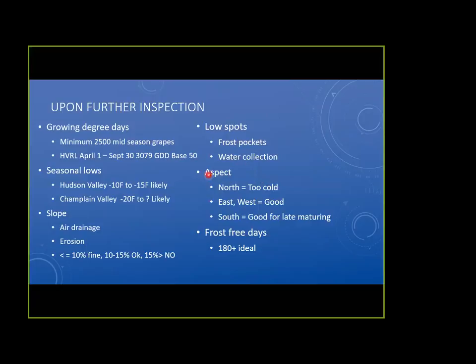Aspect — the way the vines are going to face — matters. If everything faces north, that's going to be true cold, which is not good. East to west is good: the vines get morning sun and have already gotten their warmth by the time the sun sets. South aspect is used for very late maturing crops — mostly late maturing wine grapes. For table grapes, you'd probably be fine with an east to west orientation.